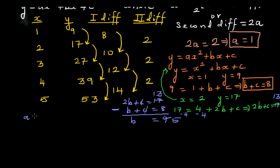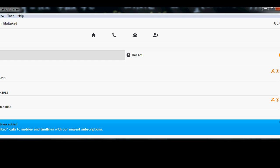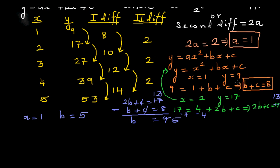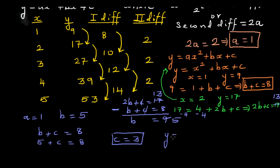So a = 1 and b = 5. Using the first equation, b + c = 8: substituting b = 5 gives 5 + c = 8, so c = 3. The final equation is y = x² + 5x + 3.